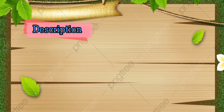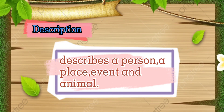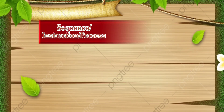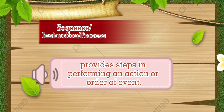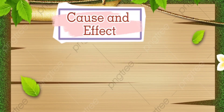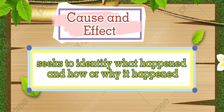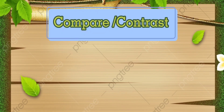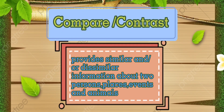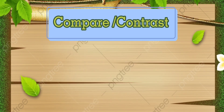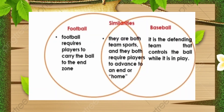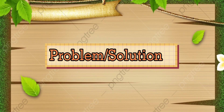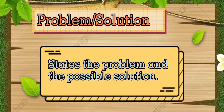Description describes a person, place, event, and animal. Sequence, instruction, or process provides steps in performing an action or order of events. Cause and effect seeks to identify what happened and how or why it happened. Compare or contrast provides similar and/or dissimilar information about two persons, places, events, and animals — we use a Venn Diagram to show similarities and dissimilarities. And the last, problem or solution, states the problem and the possible solution.